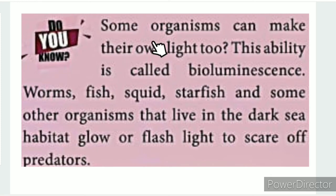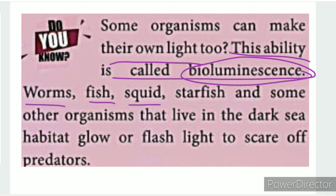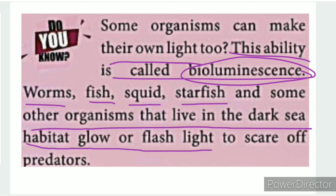Some organisms can make their own light too — this is called bioluminescence. Examples include worms, fish, squid, starfish, and other organisms that live in dark sea habitats and glow or flash light to scare off predators. There are many sources of light.